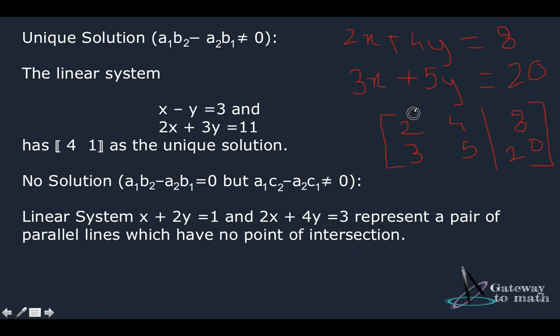So this one is a1, this one is b1, this one is c1, this one's a2, this one's b2 and this one's c2. So for unique solution, the condition is a1 b2 minus a2 b1 should not be equal to zero. This multiplied by this, 2 multiplied by 5 minus 4 multiplied by 3 shouldn't be equal to zero. And if that is true, then it has a unique solution. So right here, you can understand how important it is to understand matrices.